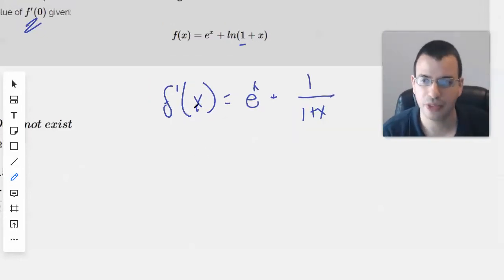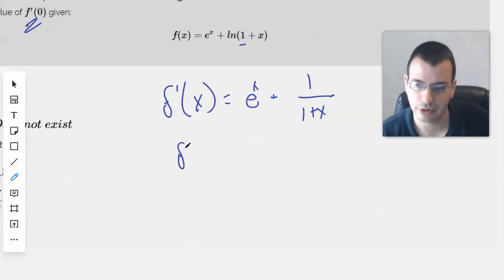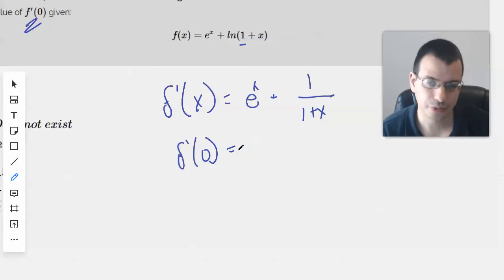And that's probably why they have the 1 there. So when we do f'(0), we don't end up with some undefined term. We don't divide by 0. We don't destroy the universe, if you will.